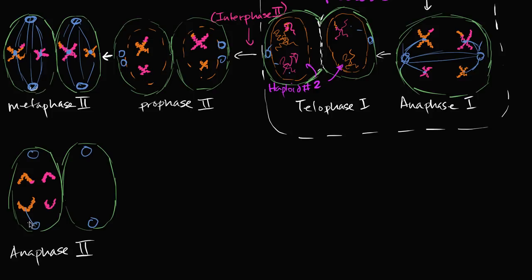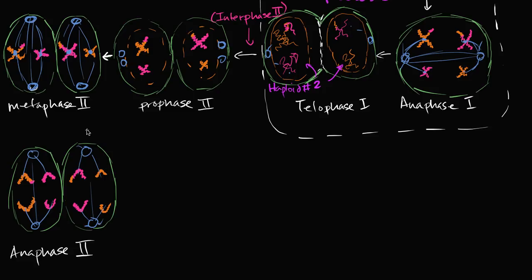The microtubules are super involved in the movement going on — they're elongating, and there are motor proteins moving the chromosomes along. The chromosomes are connected to the microtubules at the kinetochores. This is happening in both cells: formerly sister chromatids, now daughter chromosomes, are being pulled toward opposite poles in each cell.